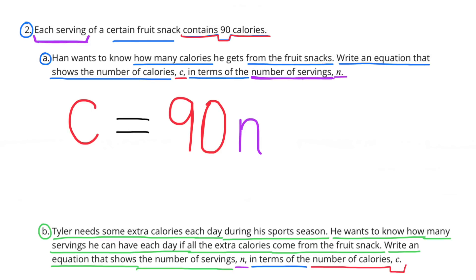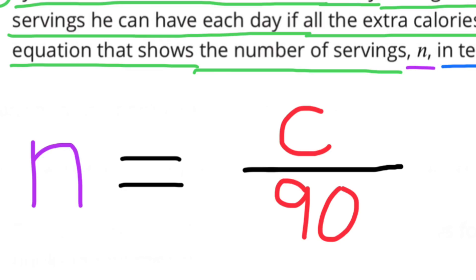B. Tyler needs some extra calories each day during his sports season. He wants to know how many servings he can have each day if all the extra calories come from the fruit snack. Write an equation that shows the number of servings, N, in terms of the number of calories, C. N equals C over 90, or N equals C divided by 90.